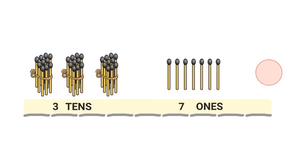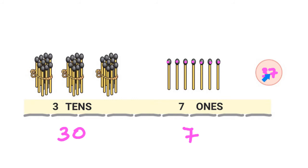Here I have 3 tens which are 30. And I have 1, 2, 3, 4, 5, 6, 7 — that's 7 ones. So 30 and 7 is 37. I have 37 matchsticks in all.